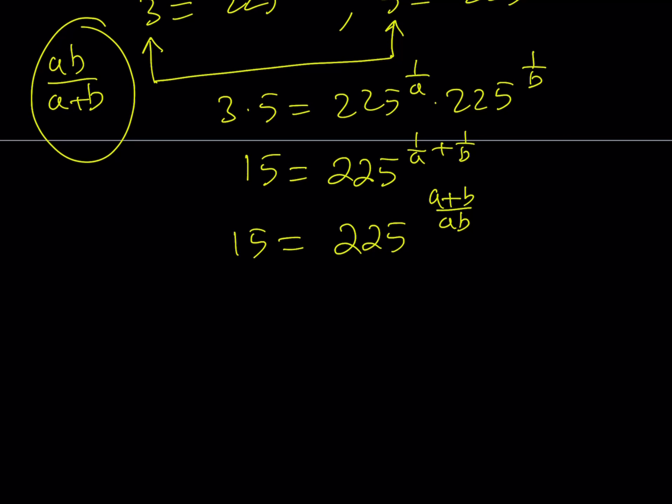But notice that the expression I'm trying to evaluate is just the reciprocal of that. So why don't we raise both sides to the power something, right? How about raising both sides to the power of the reciprocal of this thing? So I'm going to raise both sides to the power ab over a plus b. Now I have 225 to the power a plus b over ab, which is raised to the power ab over a plus b.